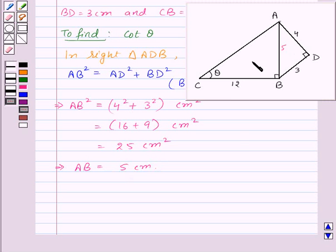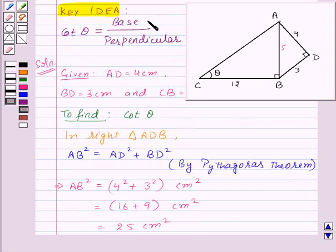Now consider the triangle ABC. In right triangle ABC, we know that cot theta is equal to base upon perpendicular.